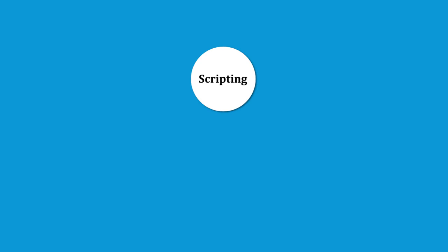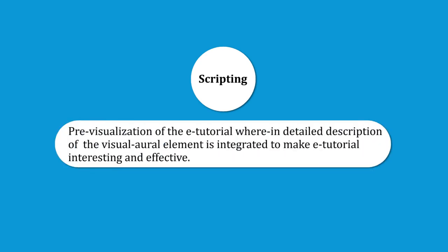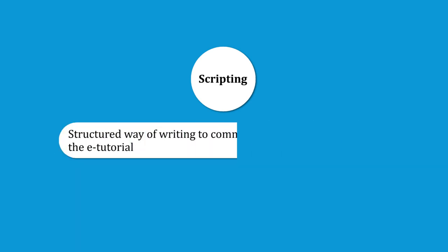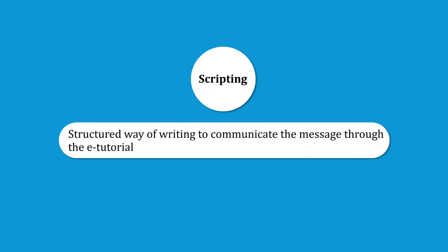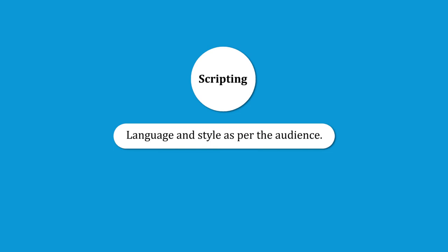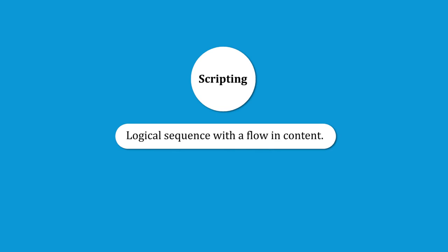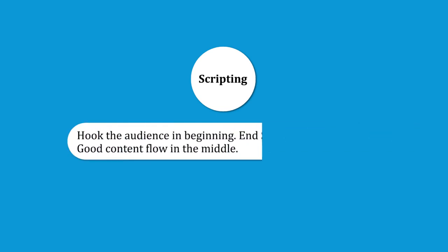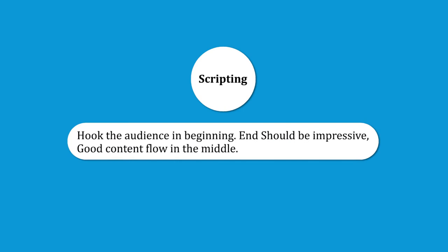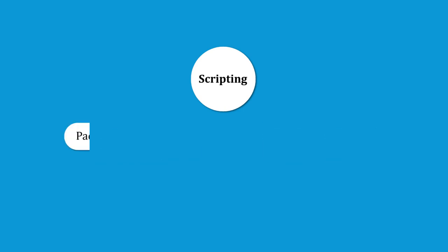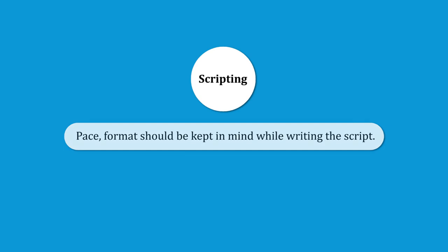The second step of pre-production is scripting. Scripting is pre-visualization of the e-tutorial where a detailed description of the visual and aural elements is integrated to make the e-tutorial interesting and effective. It is a structured way of writing to communicate the message the presenter or teacher wants to convey. The language and style should be as per the audience. It should be conversational, with simple and direct sentences. Overloading of ideas should be avoided and a logical sequence followed. The pace and format should be kept in mind while writing the script.